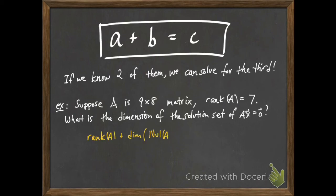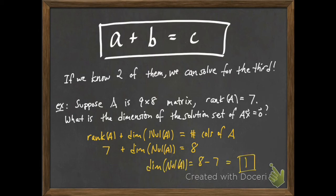Well, by the rank nullity theorem, the rank of A plus the dimension of the null space of A is just the number of columns of A. So we have that 7 plus the dimension of the null space of A is equal to 8. And then we just solve. And we see that 8 minus 7 is 1 and so the solution set to Ax equals 0 is one-dimensional.